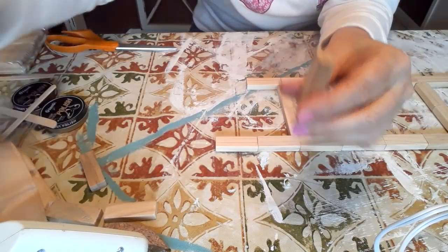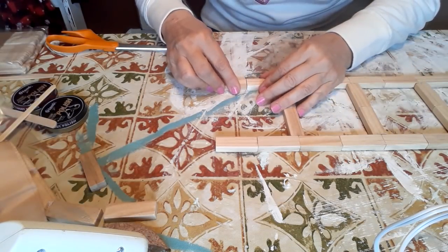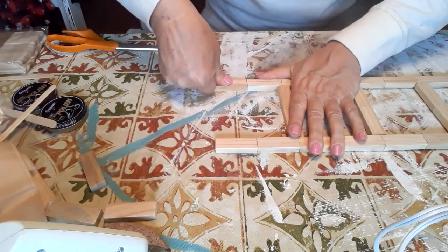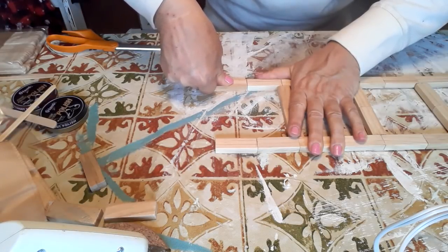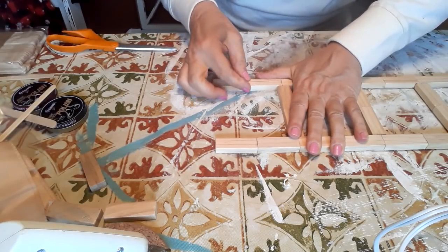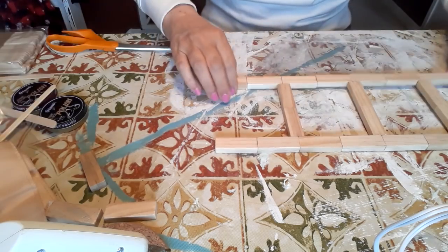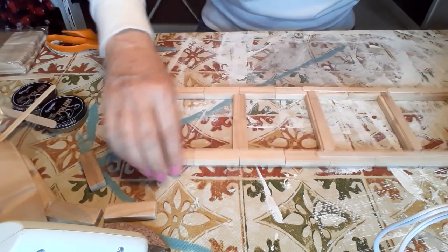These will be the last two blocks that I'm putting on. And I think you might end up, if you do this exact same pattern that I'm doing, with three extra of the wooden blocks. That's what I ended up with anyway. Again, a little bit of glue. And then we'll flip this over and I'll show you how we are going to put the pieces on the back of it to help make it more stable and sturdy.